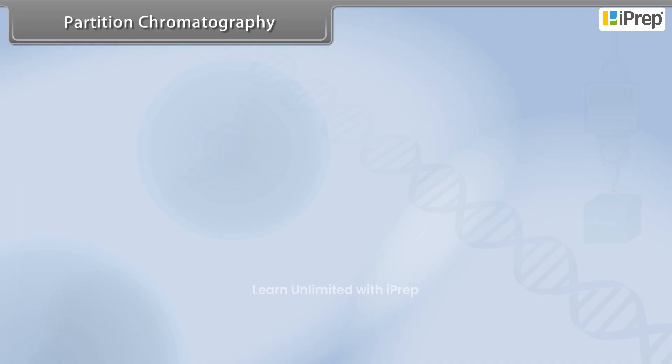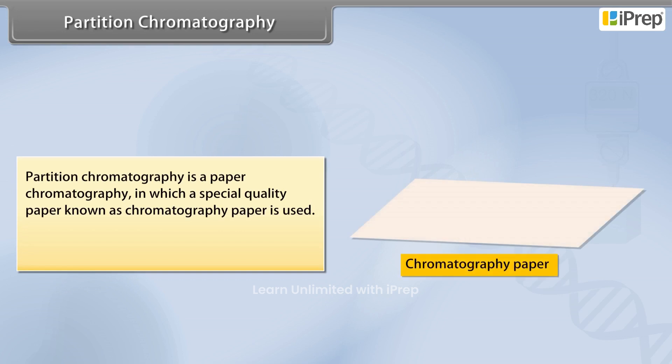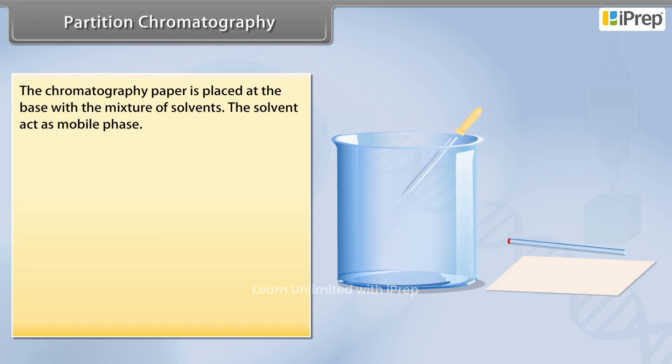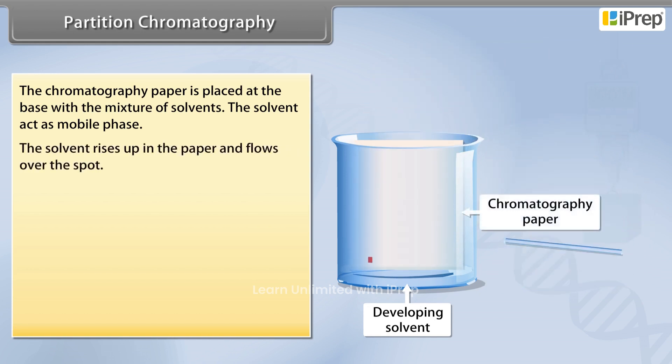Partition chromatography is a paper chromatography in which a special quality paper known as chromatography paper is used. Chromatography paper contains water trapped in it, which acts as the stationary phase. The chromatography paper is placed at the base with the mixture of solvents. The solvent acts as the mobile phase and rises up in the paper.